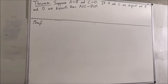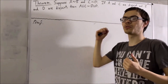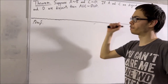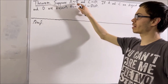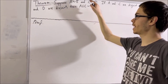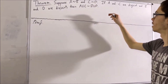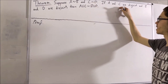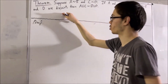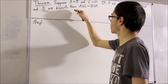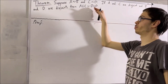Hello! In this video, we're going to prove the following theorem. Suppose A is equinumerous with B and C is equinumerous with D. If A and C are disjoint and B and D are disjoint, then A∪C is equinumerous with B∪D.